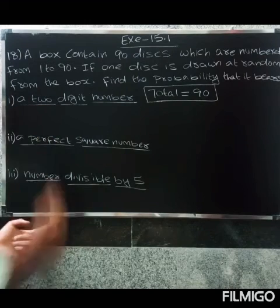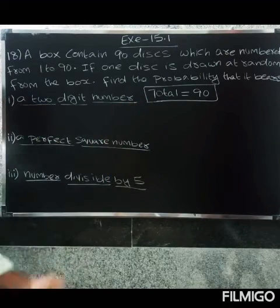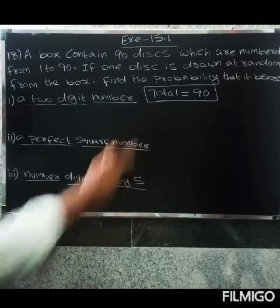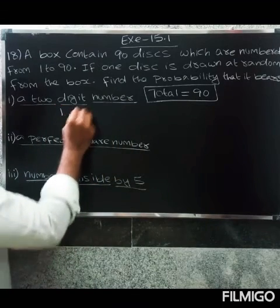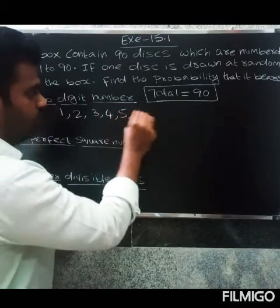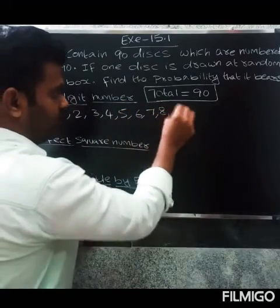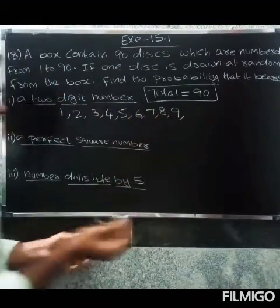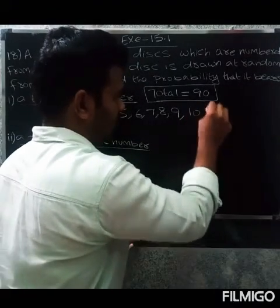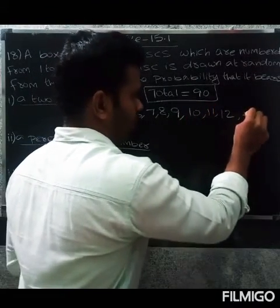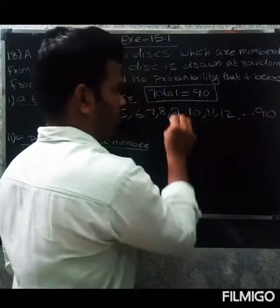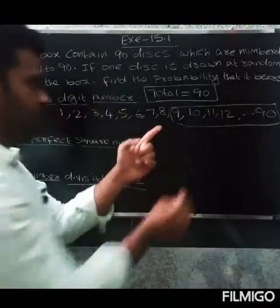So this is 2-digit number. So 1 to 90 disc. That is 2-digit number. So 2-digit number is 1 2 3 4 5 6 7 8 9. This is single digit. This is 2-digit number: 10, 11, 12... This is 90. This is 2-digit number. This is 9.